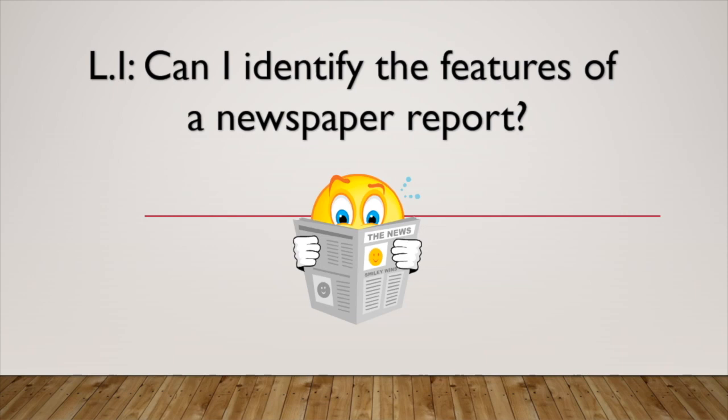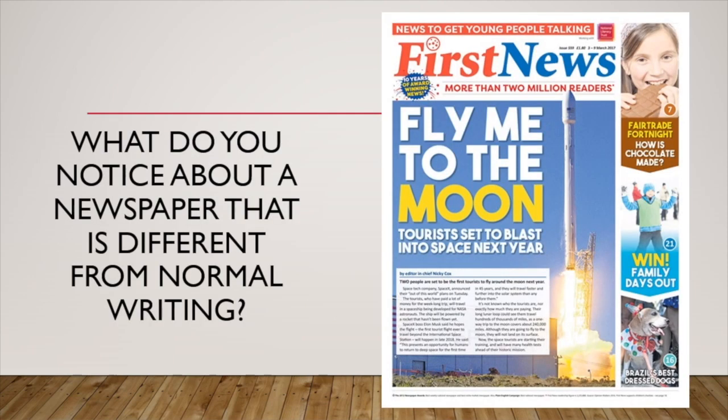Today we're looking at identifying the features of a newspaper report. To start us off, have a look at this copy of the front cover of First News, which is a children's newspaper. What do you notice about a newspaper that is different from normal writing? There might be some things on this cover that you're able to spot, and perhaps you know the name of them too. We're going to go through the different features that make up a newspaper.